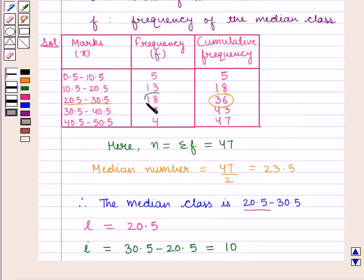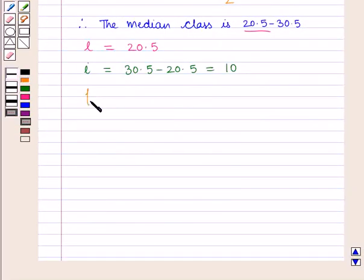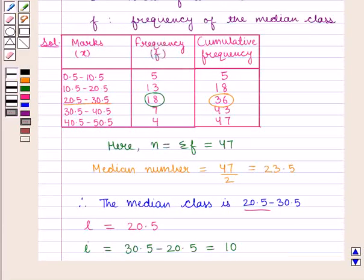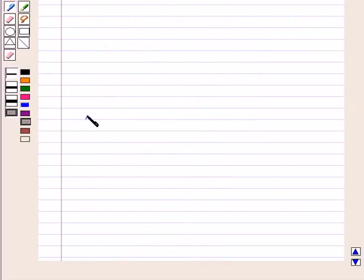F is the frequency of the median class that is 18. And C is the cumulative frequency of the class just lower than the median class that is 18. C is equal to 18.